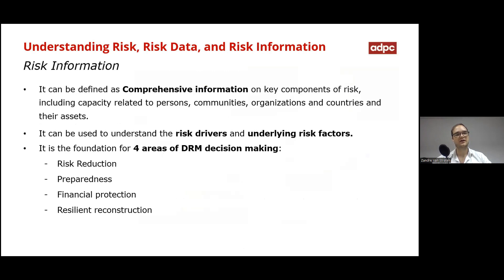What is risk information? Risk information can be defined as comprehensive information on key components of risk, including capacity related to persons, communities, organizations, and countries and their assets. It can be used to understand the risk drivers and underlying risk factors. It is also the foundation for four areas of disaster risk management decision making, including risk reduction, preparedness, financial protection, and resilient reconstruction.